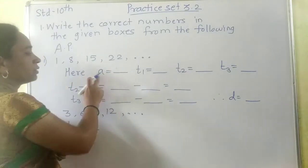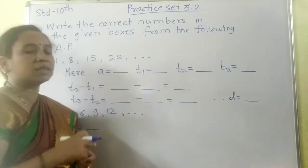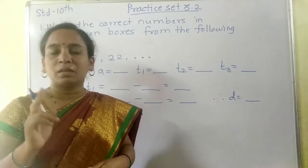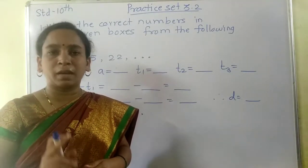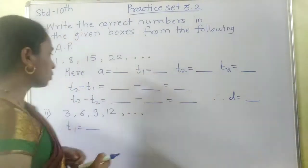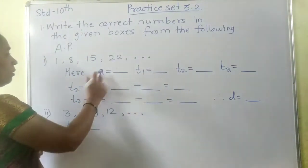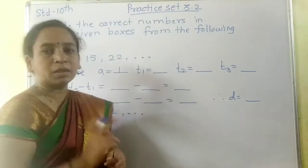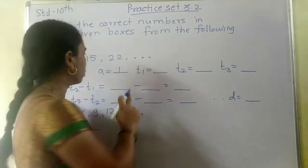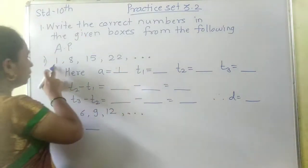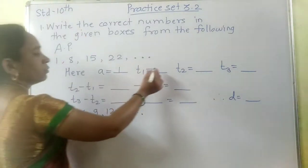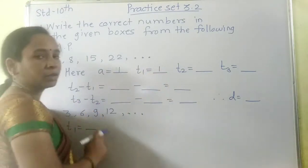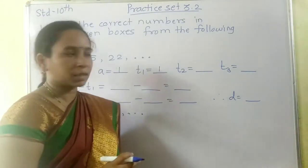Here, A is the value of the first term. If the sequence is in AP, then the first term is nothing but A's value. So here A equals 1. T1 means first term, so the first term is 1. This A's value and T1, the first term, would be the same.